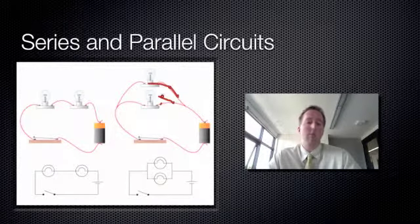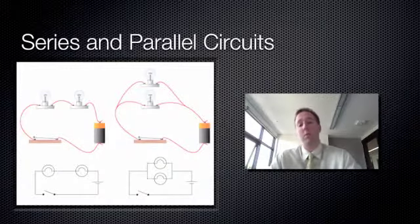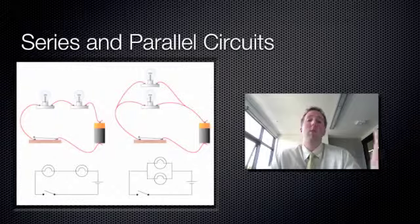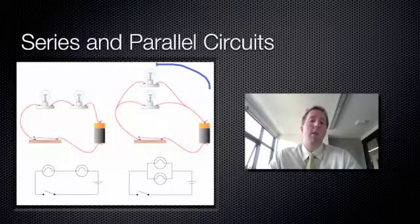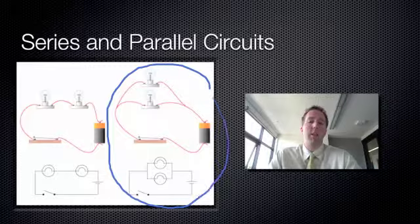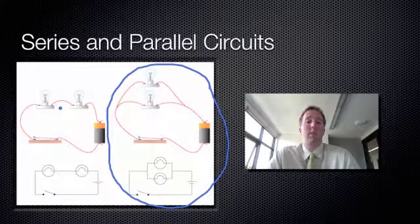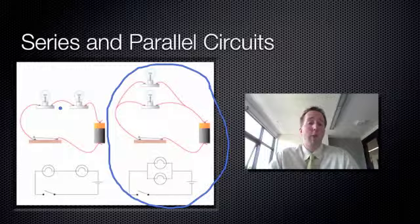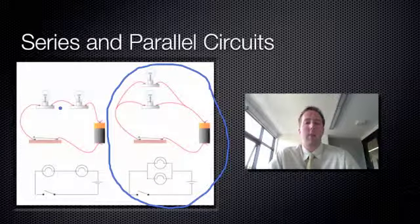In your house, you can turn some globes on and some globes off, and all the globes are always glowing at equal brightness. That's because in your house all of your light globes — and in fact all of the electrical appliances in your house — are connected in parallel, not in series.